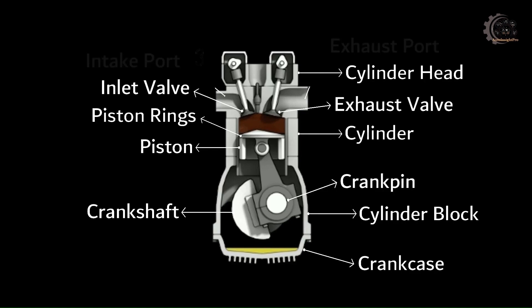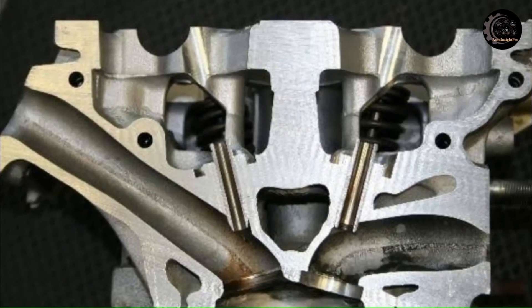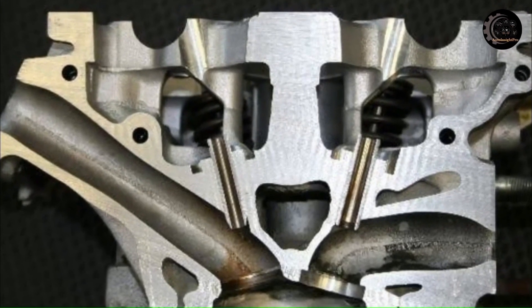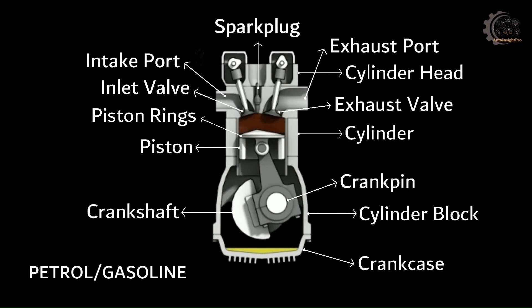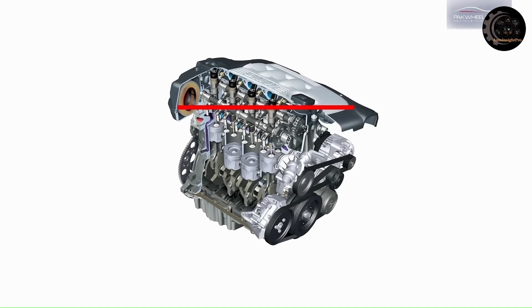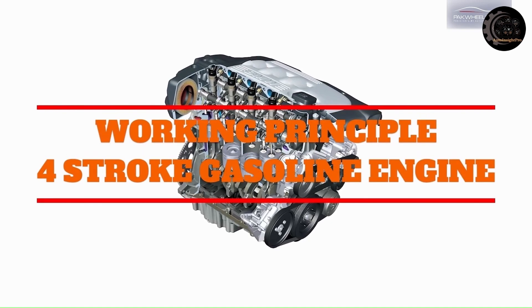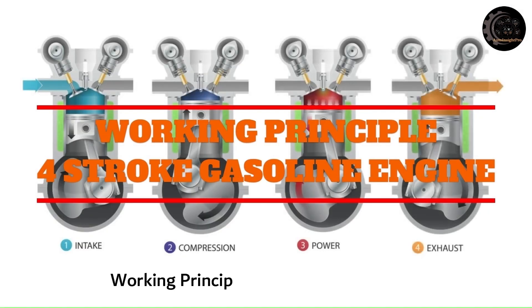Intake and exhaust ports are passages cast in the cylinder head, leading from the manifolds to the respective valves. For a petrol engine, a spark plug is used to ignite the compressed air-fuel mixture. For a diesel engine, an injector is used in the compression ignition engine — it sprays fuel into the combustion chamber at the end of the compression stroke and is fitted on the cylinder head.